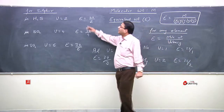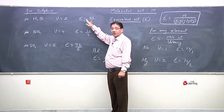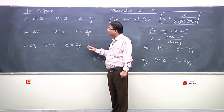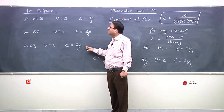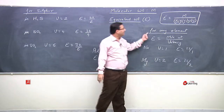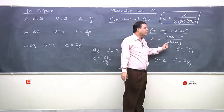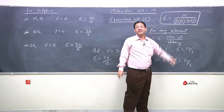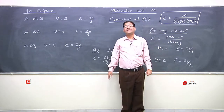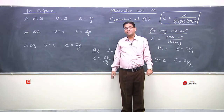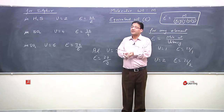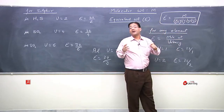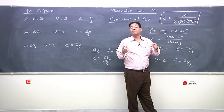So the same sulfur has different equivalent weights in H2S, SO2, and SO3. Equivalent weight for any element is defined as molecular weight upon valency. The change in oxidation state changed, and equivalently the equivalent weight changed.